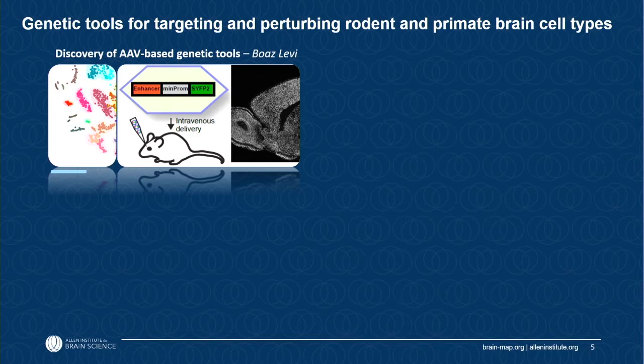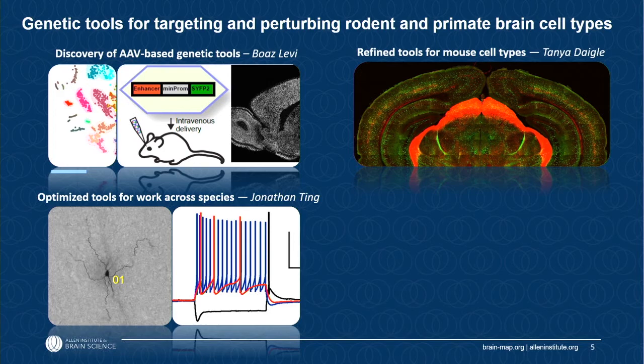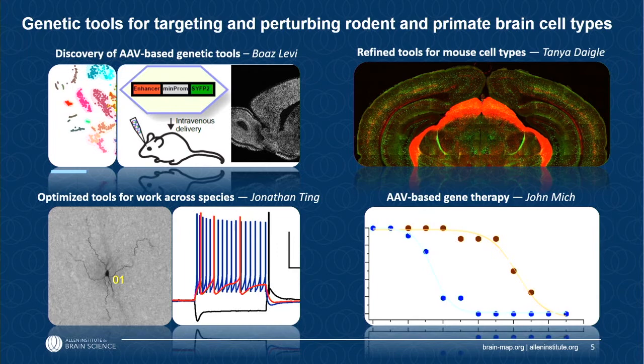The talk will be divided into four parts. First, Boaz Levy will talk about using single-cell RNA-seq and single-cell ATAC-seq to define regulatory elements to build and discover new cell-type-specific viral genetic tools. Then Tanya will talk about how we can use these tools together with transgenes for really refined cell-type access in the mouse. Then Jonathan will describe how we can optimize these tools to provide not only mouse access but primate access. And then John Mitch will talk about how we can use these genetic tools for therapies.